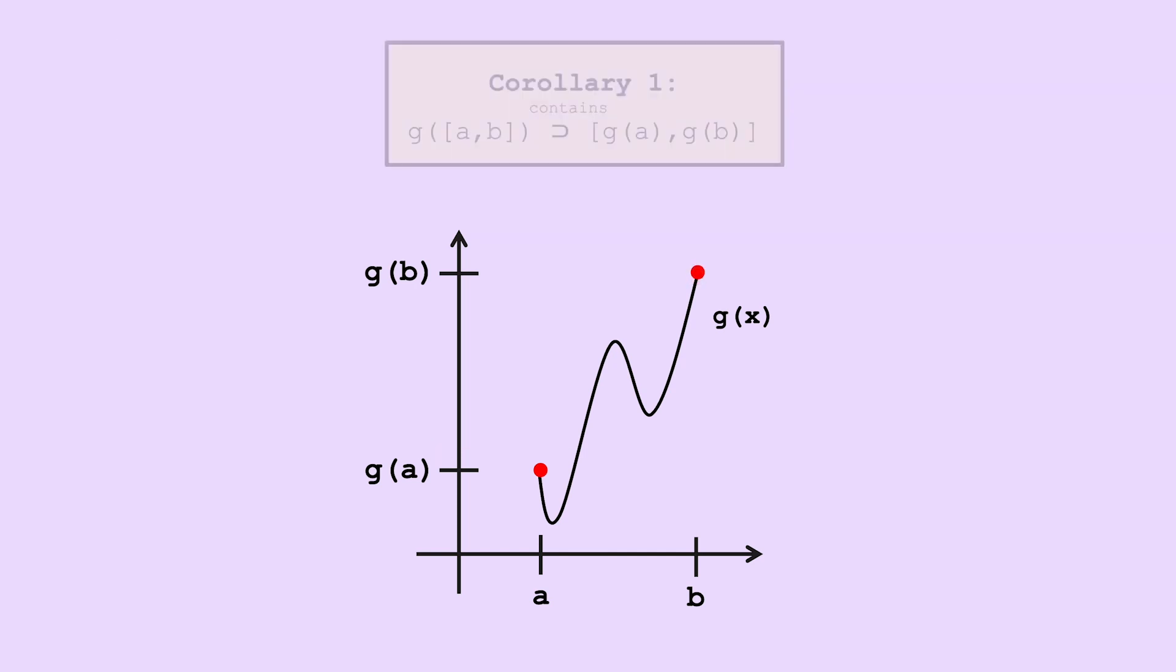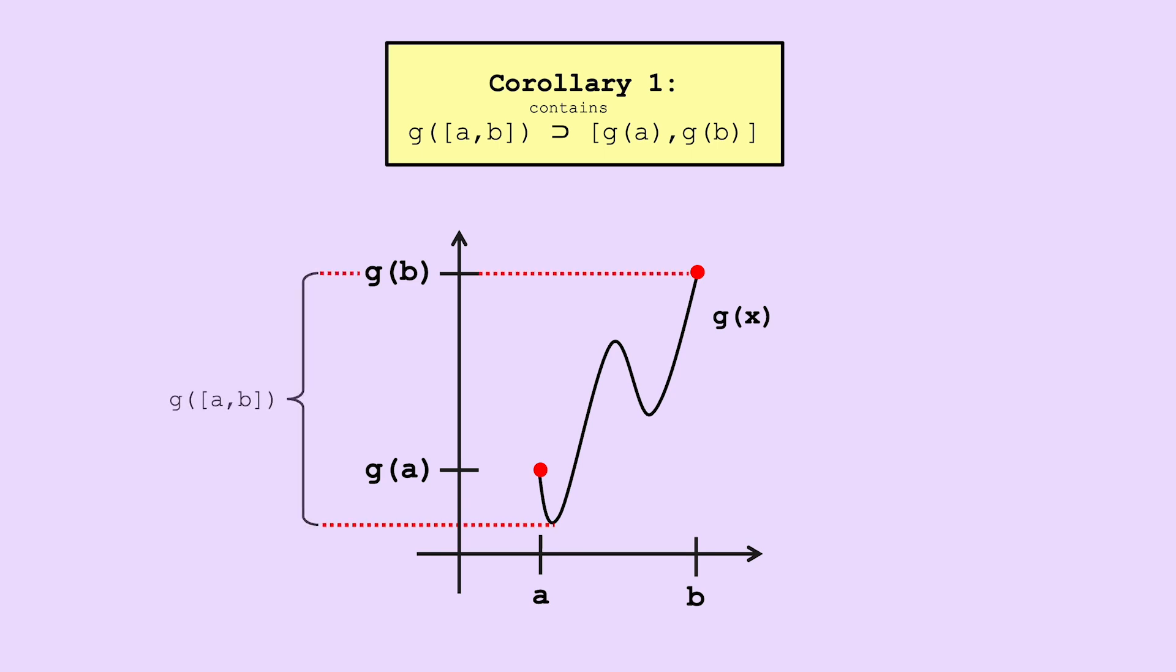There are three important corollaries for what we're doing today. Firstly, g of the interval ab always will contain the interval g of a to g of b. If you're not familiar with this notation, it means that if we look at the output of g at every point in the interval ab, the interval you form, which we will call g of ab, will contain the interval g of a to g of b. By the intermediate value theorem, we know g takes on every value in the interval g of a to g of b. So by definition, the interval g of a to g of b must be a part of g of the interval a to b.